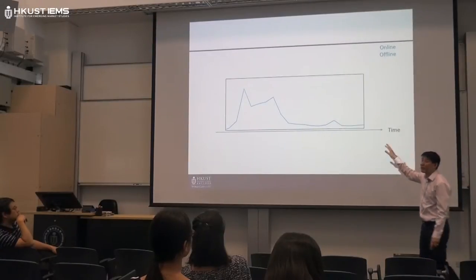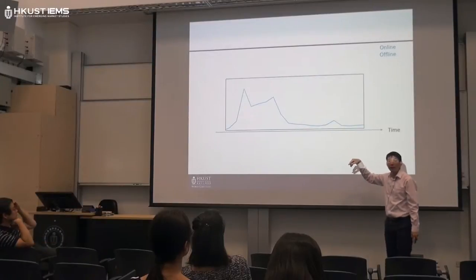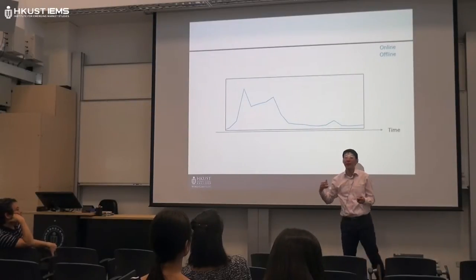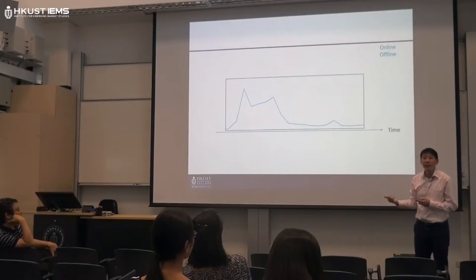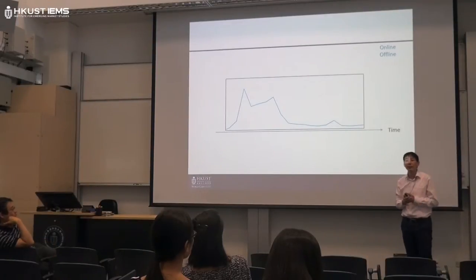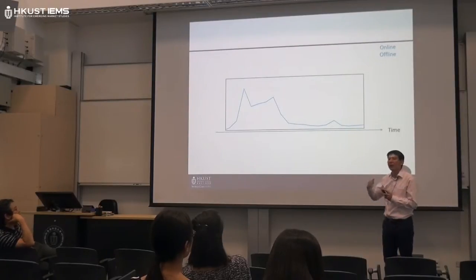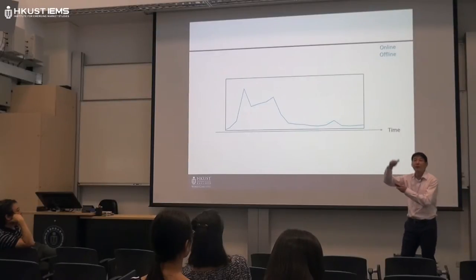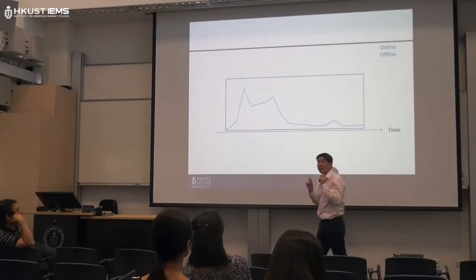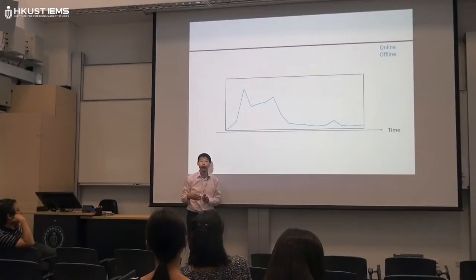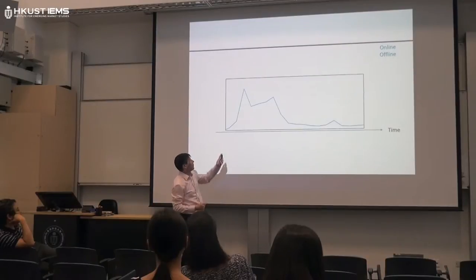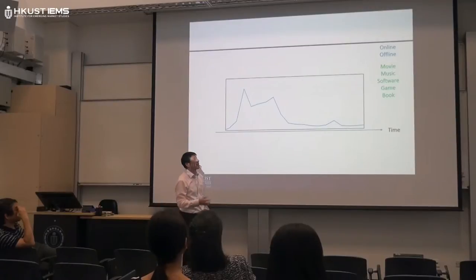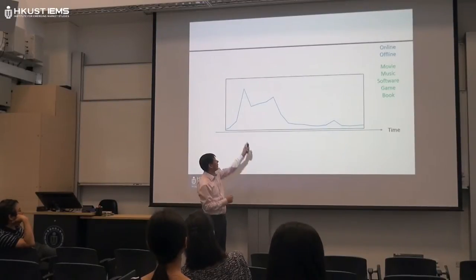Whether infringing activities are online or offline also matters. Offline means buying a pirate CD in the street or a shop. Online infringing could be through websites or Google search engines, which are specifically what we're targeting. If you can memorize the URL address of a particular website, you can go directly and download the illegal movie without using a search engine. These factors determine the shape of the infringing activity curve.